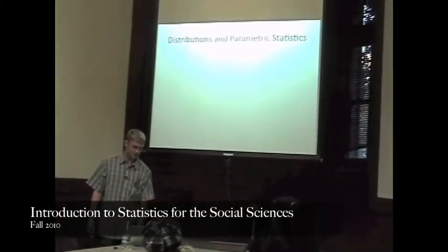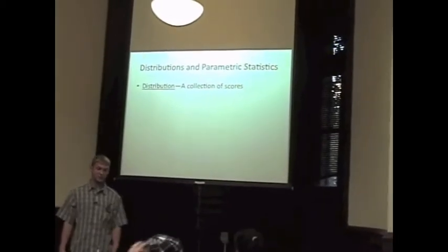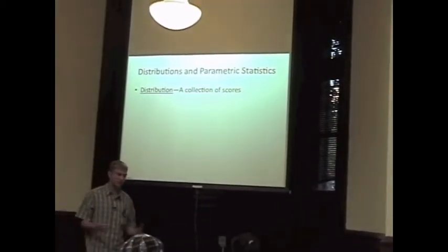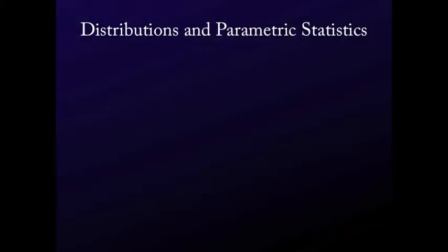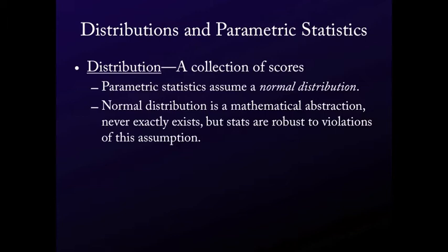So distributions and parametric statistics. A distribution is just some collection of scores, like all the test scores in the class. You guys are probably fairly familiar with this. Parametric statistics assume a normal distribution. Everyone is probably familiar with a normal distribution.